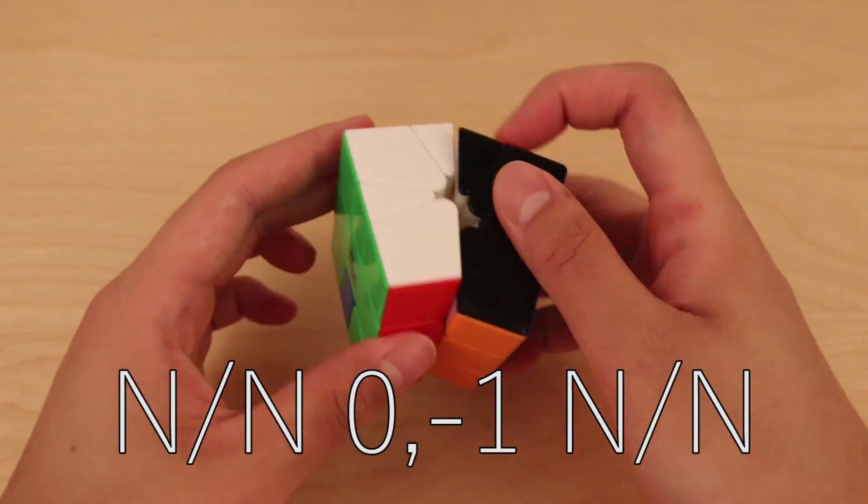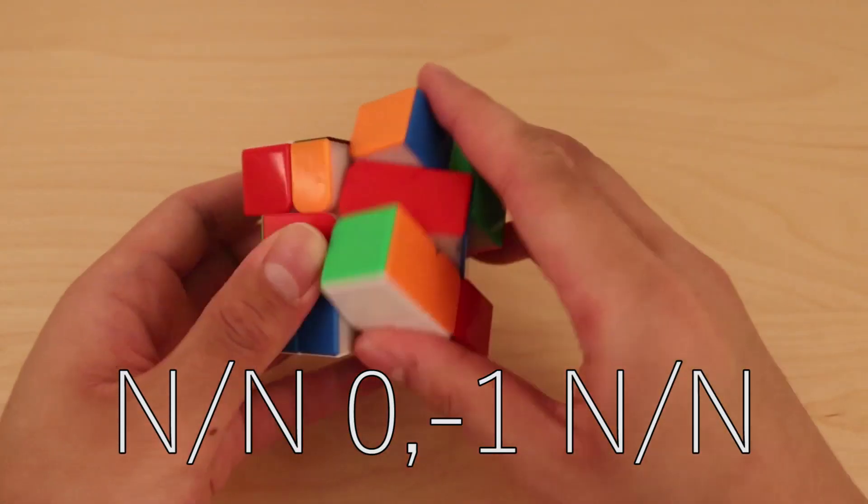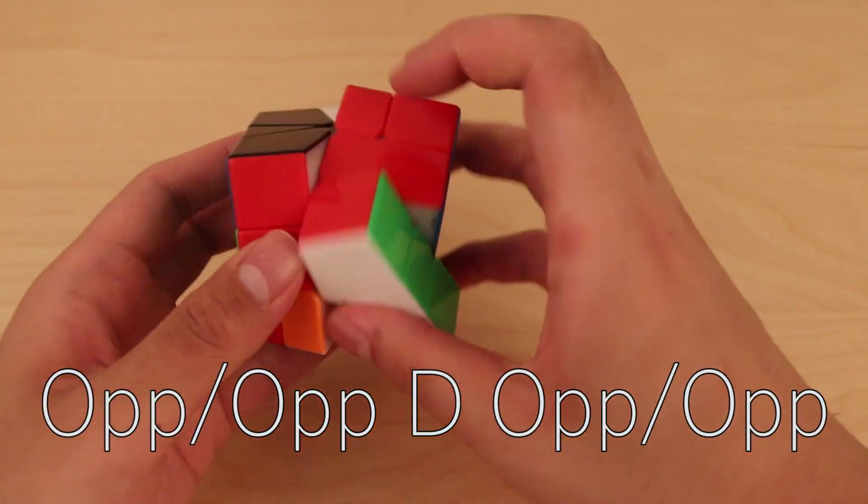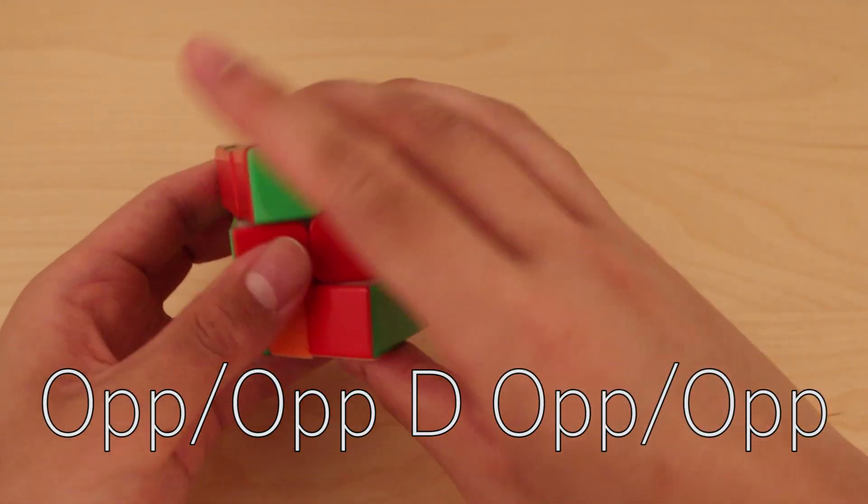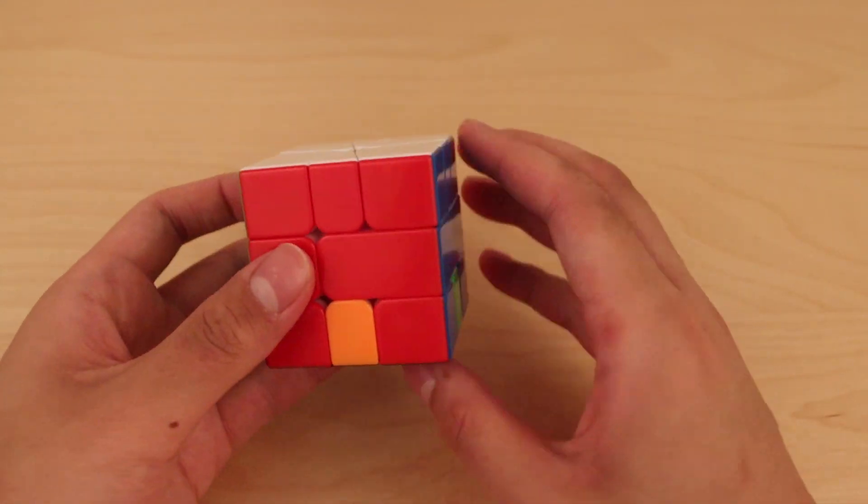So here's the NN solution, here's the op op solution, and the pn pn solution.